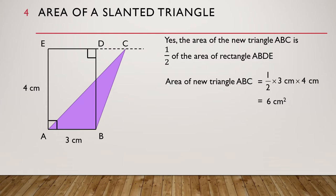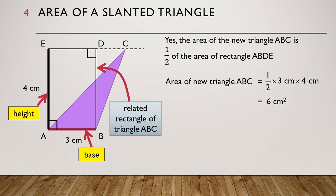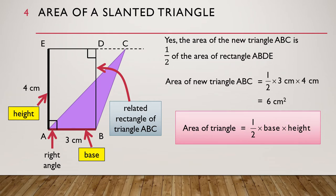In this case, rectangle ABDE is still the related rectangle of triangle ABC. Triangle ABC and its related rectangle share a common side AB, so AB is the base of triangle ABC. EA is the other side of the related rectangle, so EA is the height of triangle ABC. The height is perpendicular to the base, and the area of the triangle is still equal to half times base times height.